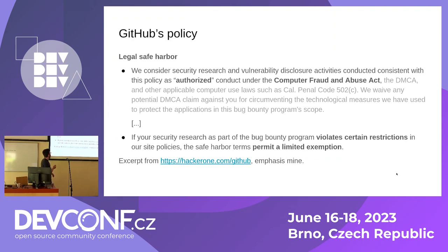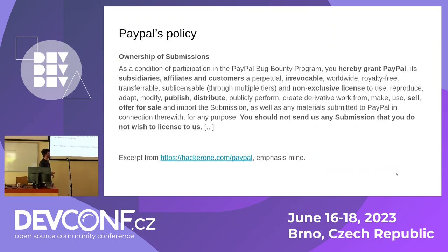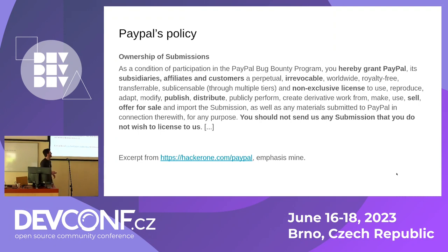The policies differ quite a lot. GitHub is a software company so they understand a lot. PayPal on the other hand has something in their policy that might make you not want to report to them. Basically they say: if you report to us, you hereby grant PayPal — and not just PayPal but basically anyone they choose, like subsidiaries, affiliates, customers — an irrevocable license to the things you've given them. It's not exclusive so it's still yours, but they can publish, distribute, sell, offer for sale and do whatever. For some researchers this is like — I don't want to get into this. I just want to submit a report. I'm not giving you a license to go sell it. And they even explicitly say don't submit to them if you don't want to.